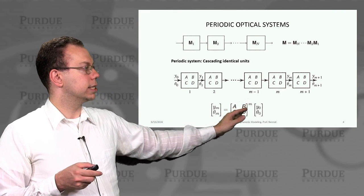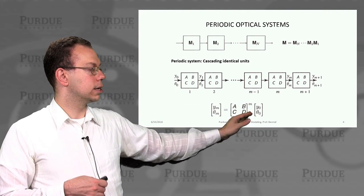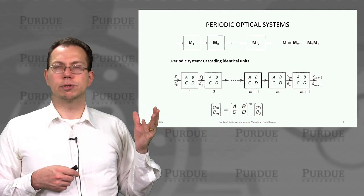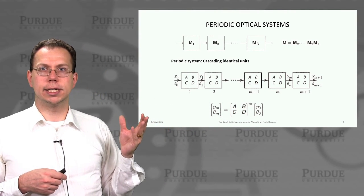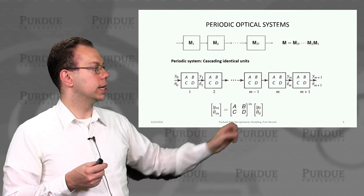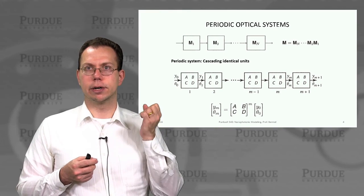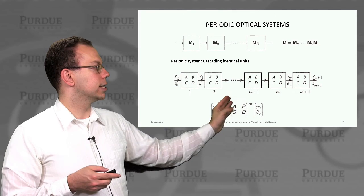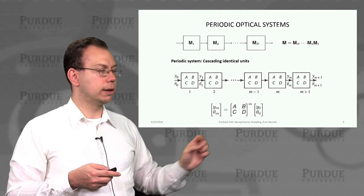The conceptual approach is that we create an ABCD matrix for each subunit, and then we would multiply the subunit to the mth power if we have m subunits. That gives us the final output after m periods.